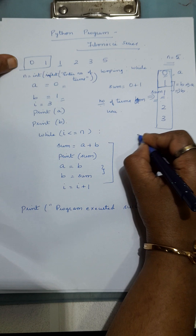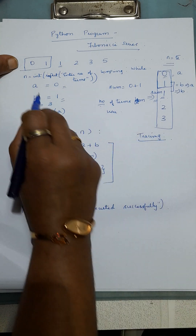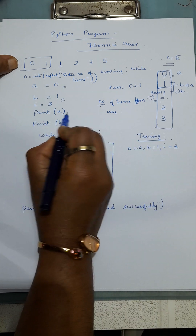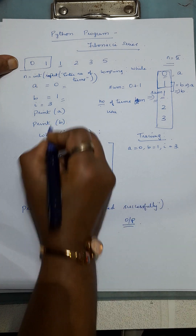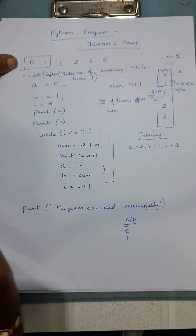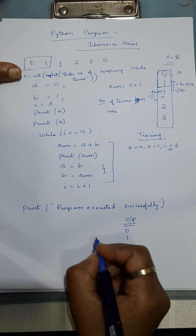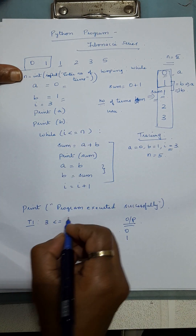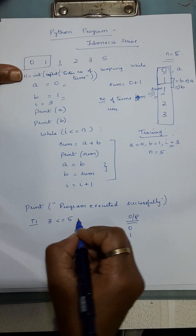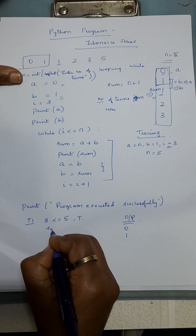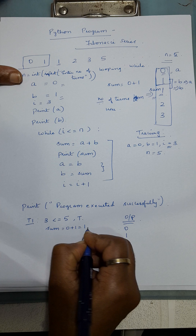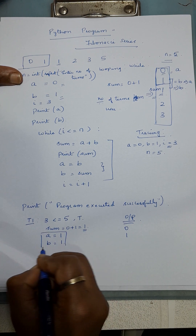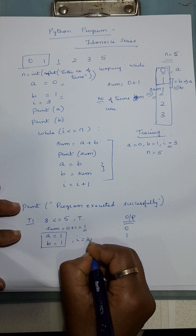Let me trace the code now. Initially: a = 0, b = 1, i = 3. Print a gives 0, print b gives 1. Now i = 3. Trace 1: 3 <= 5 is true, so it enters. sum = a + b = 0 + 1 = 1. Then a = b (so a = 1), b = sum (so b = 1). The current values of a and b are now 1 and 1. I print sum, so 1 is printed. Then i = 3 + 1 = 4.